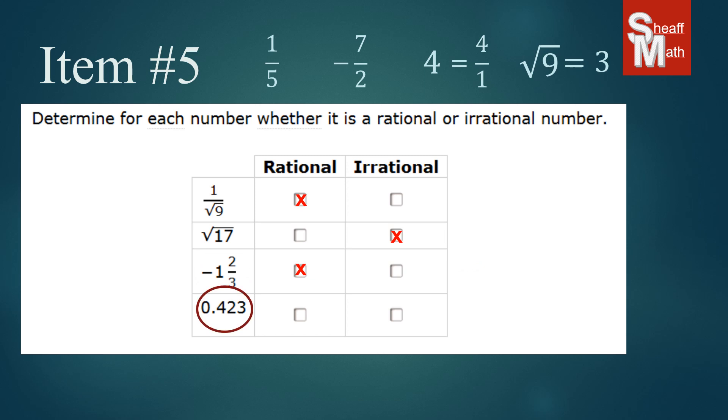Now what about the last one, the decimal? Do you think a decimal can be a rational number? Well, if you just read this number, it's 423 thousandths. And so that's exactly what it is in a fraction form, 423 over a thousand. And this is a good fraction. Therefore, this is a rational number as well.